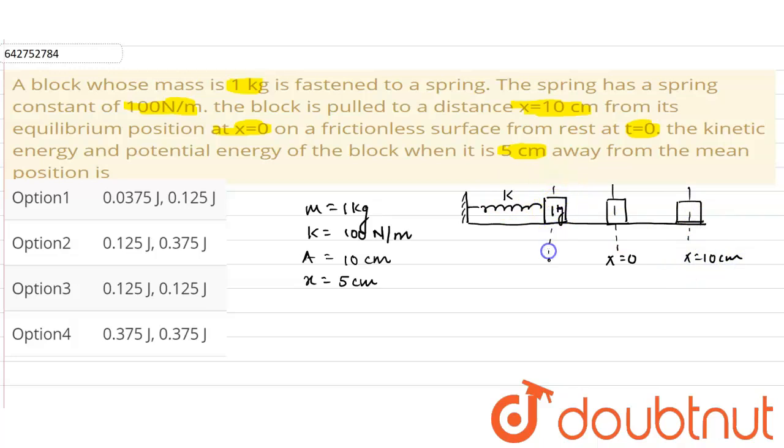So it will perform the SHM between x equals 10 centimeter. This is the extreme position where x is 10 centimeter. Now we have to find the kinetic energy and potential energy when the displacement of the block is 5 centimeter from the mean position.